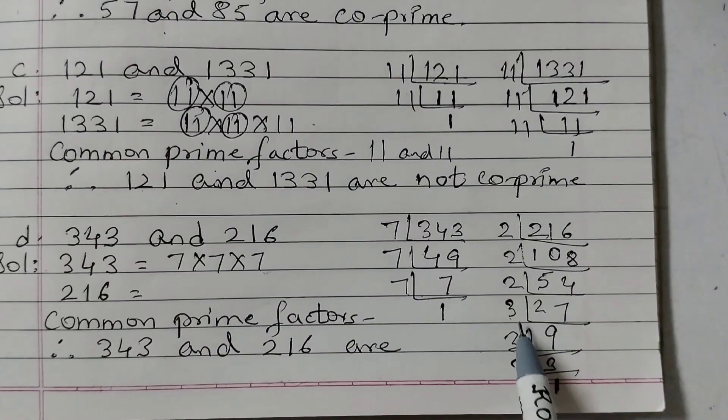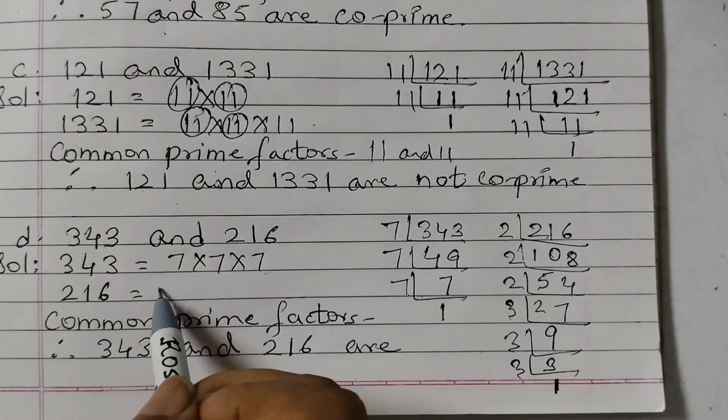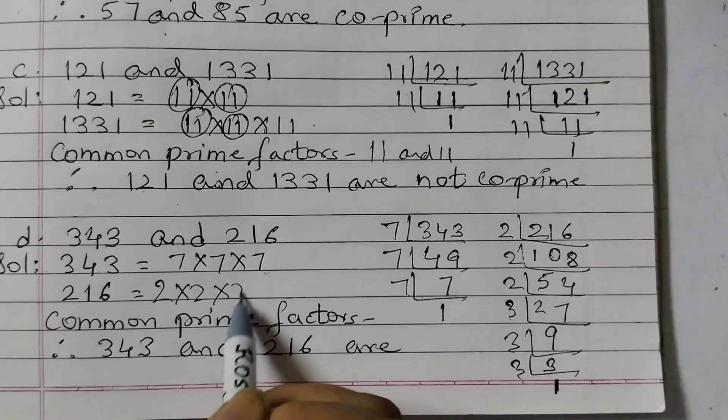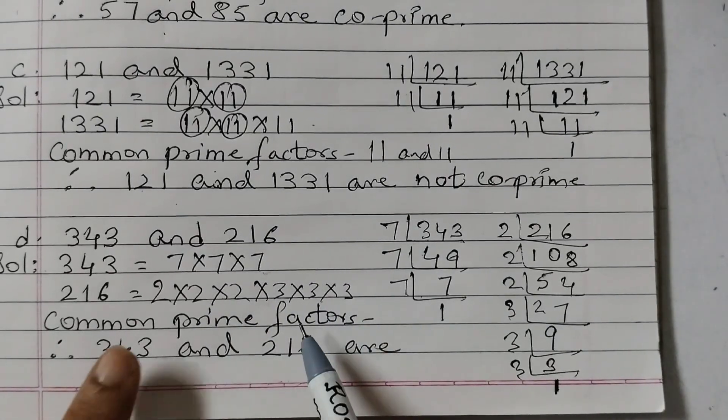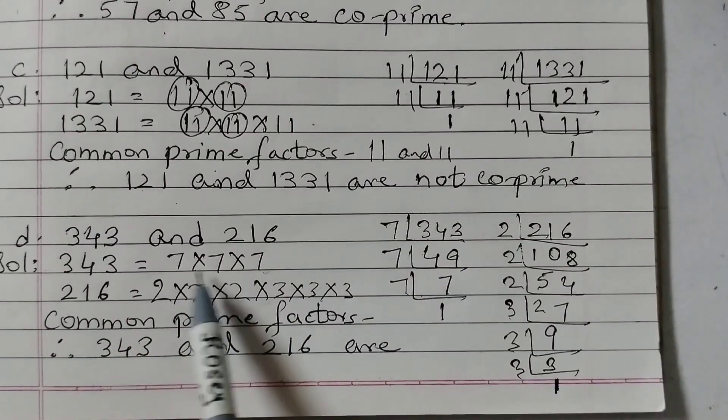So 1, 2, 3. 1, 2, 3. 2 into 2 into 2. 3 into 3 into 3. Now check. Is there any common prime factor?